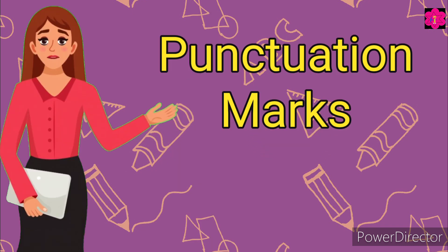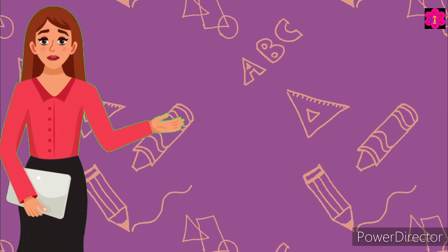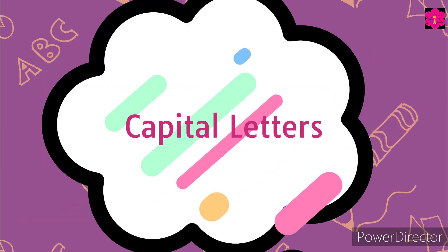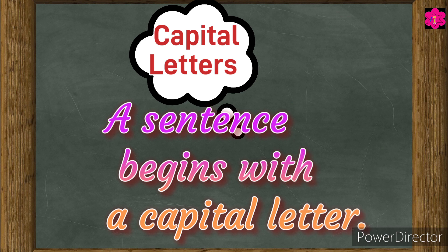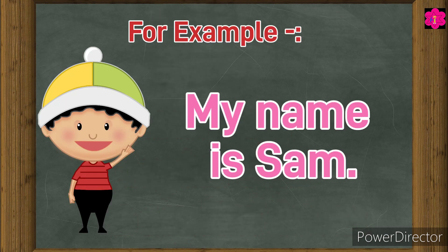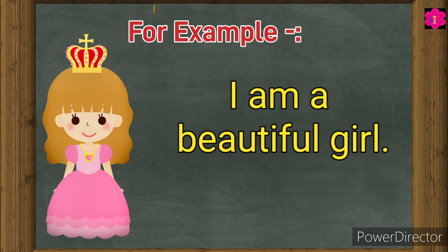So today we are going to learn punctuation marks. First we start with capital letters. A sentence begins with a capital letter. For example, my name is Sam. Here the sentence begins with letter M and M is in a capital letter. The next example is I am a beautiful girl.